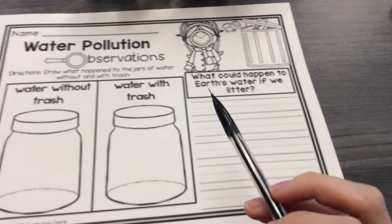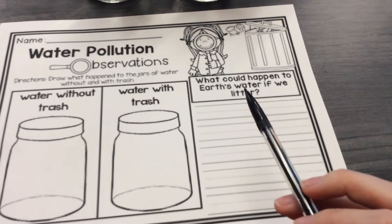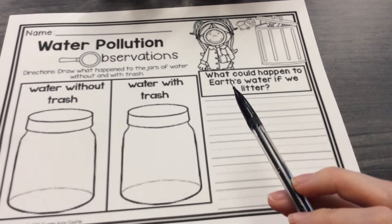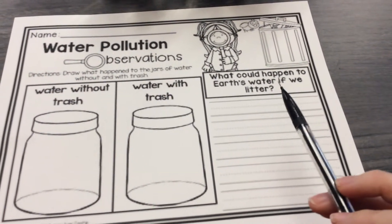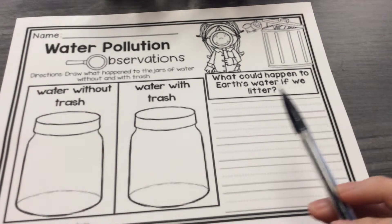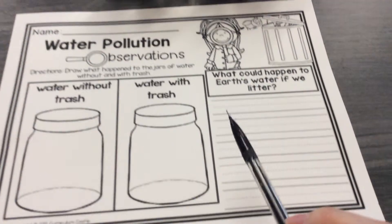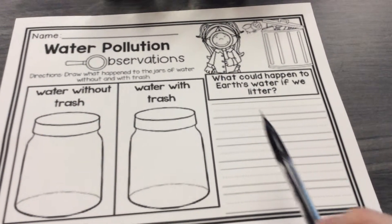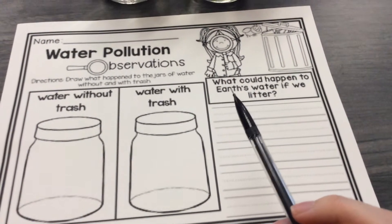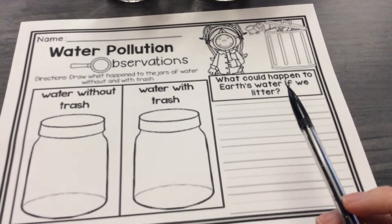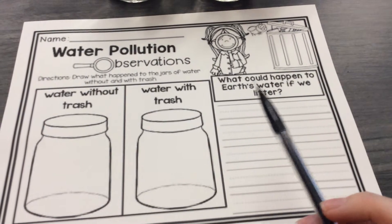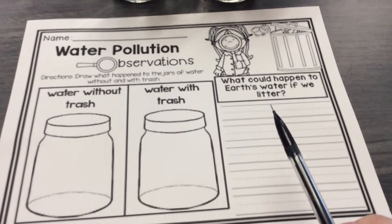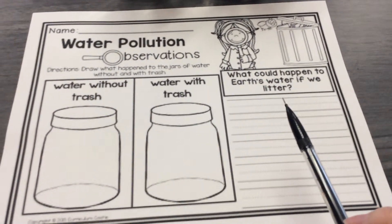Then over here it says, what could happen to earth's water if we litter? You're going to write a sentence about what could happen to earth's water if we keep littering.